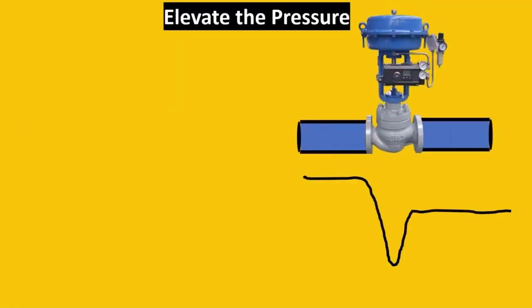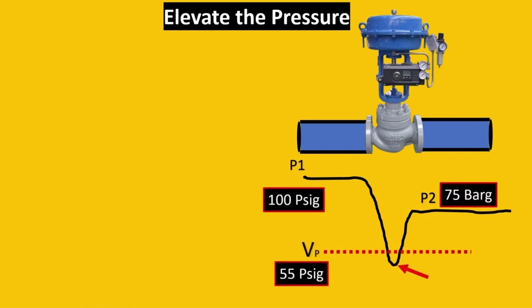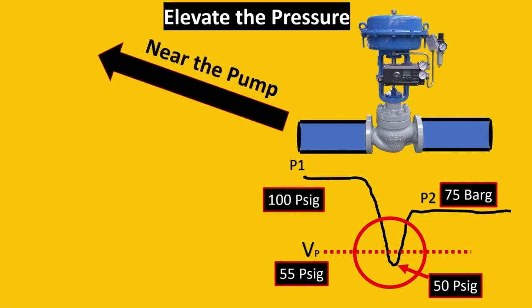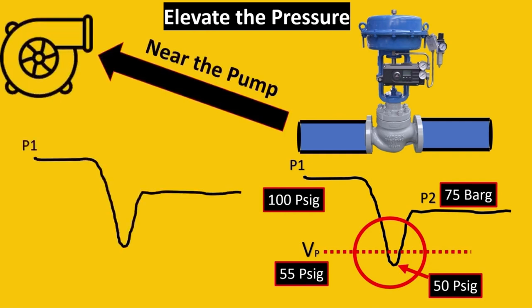Here's your control valve and the pressure drop curve. Your vapor pressure shows cavitation will happen because the pressure drop goes beyond 50 psig and vapor pressure is 55 psig. What we do is move this entire solution near to the pump and see what happens. When near the pump, the same pressure drop curve occurs but P1 is now elevated by 10 psig.